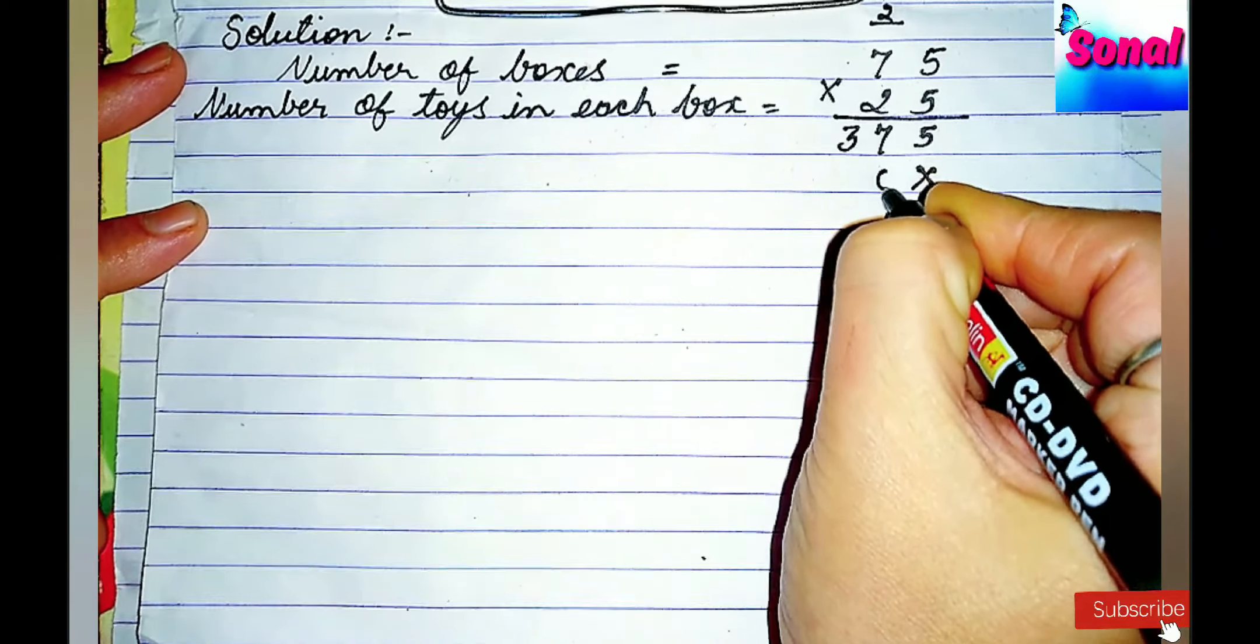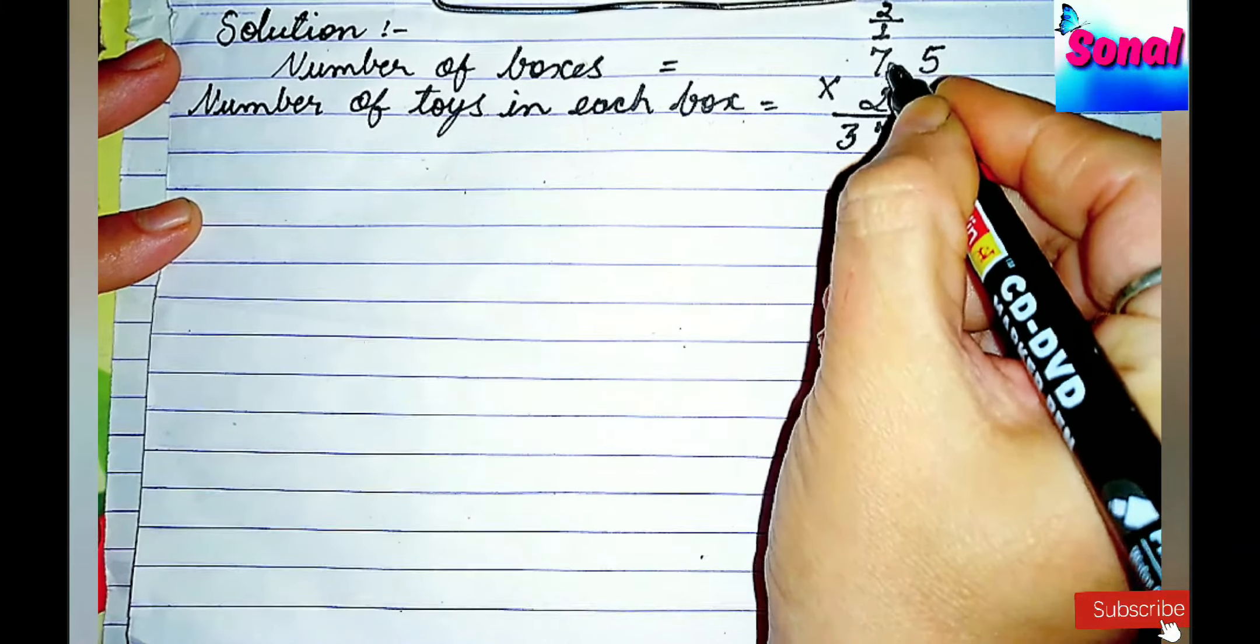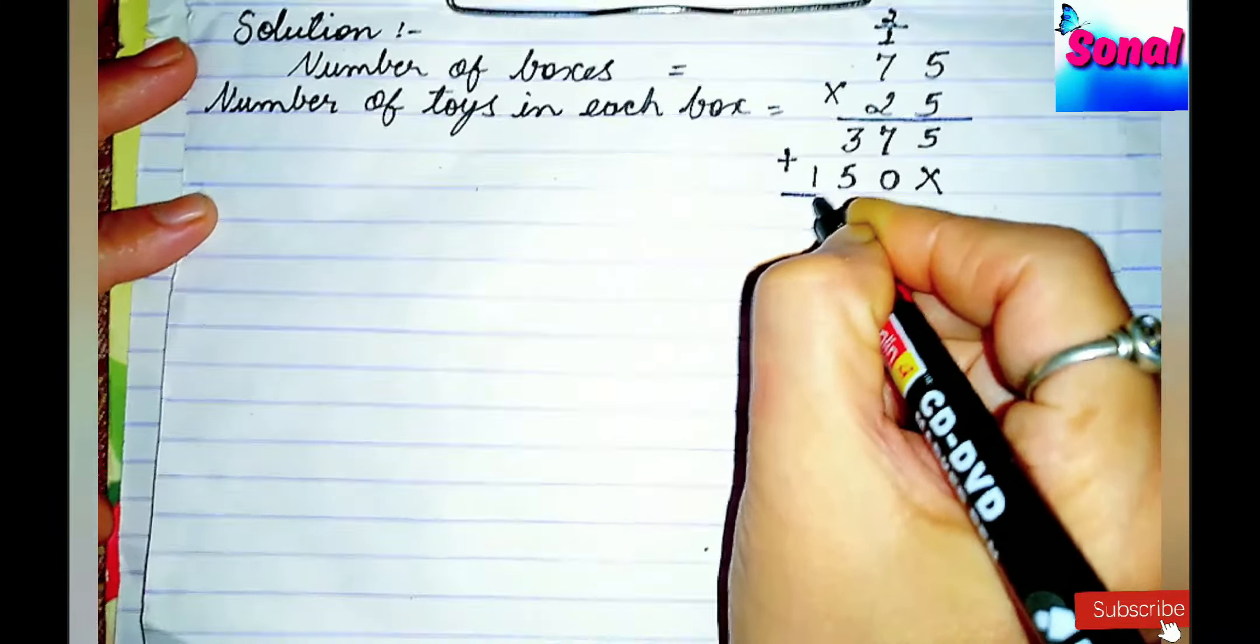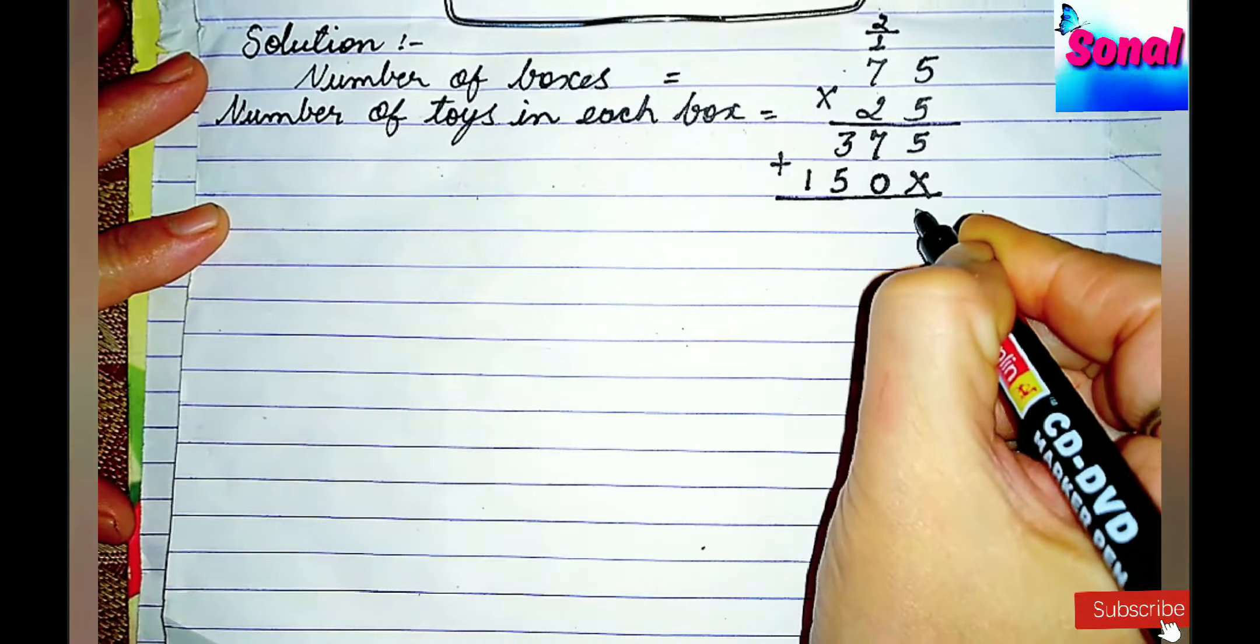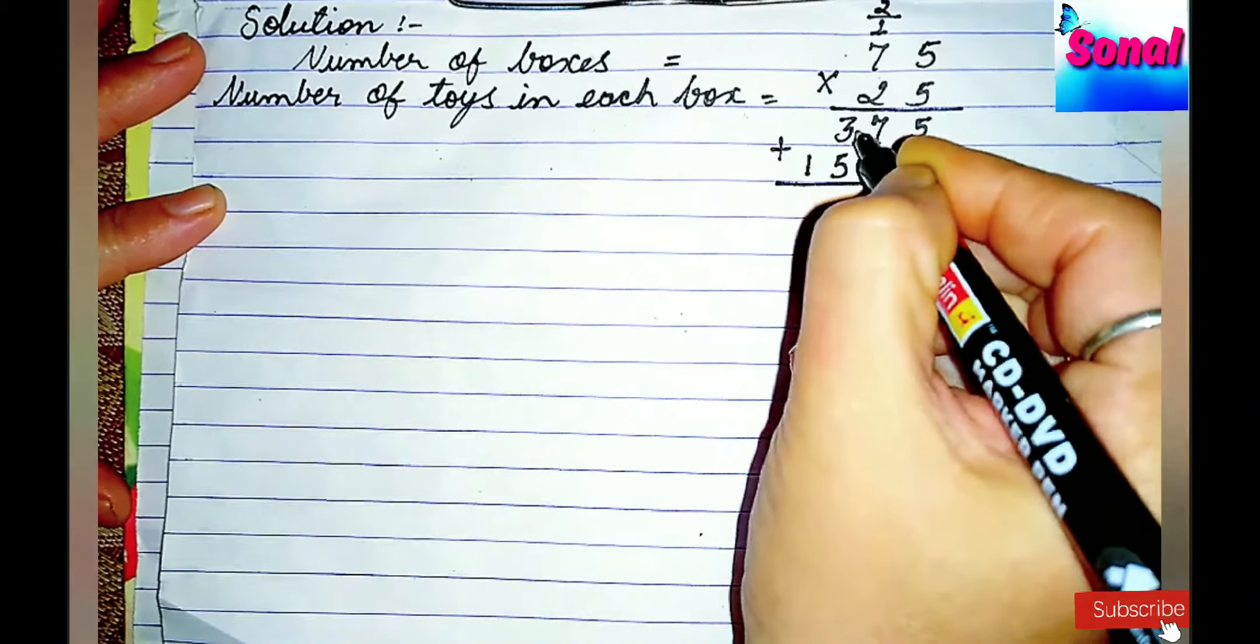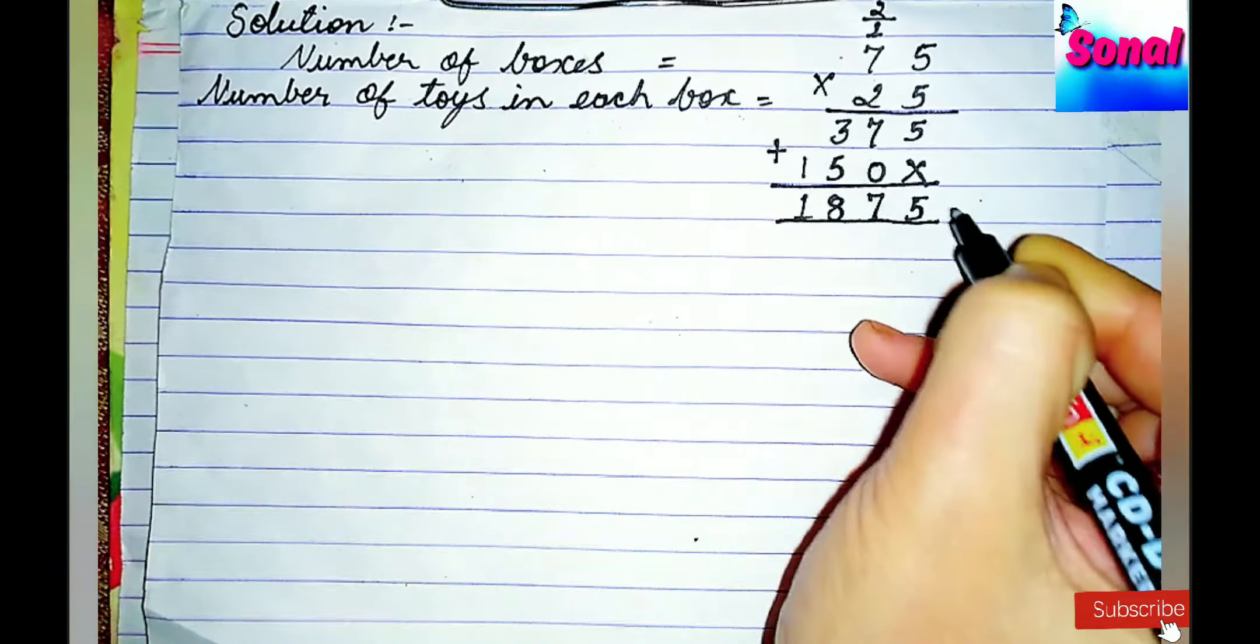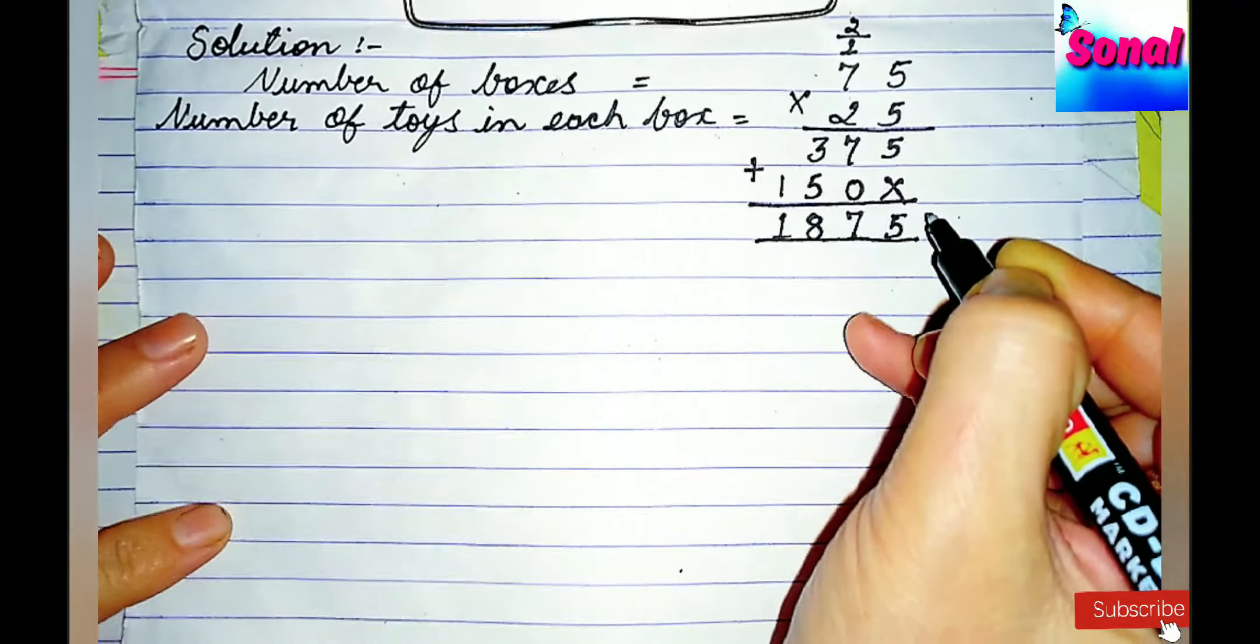5 times 2 is 10, write 0, carry over 1. 7 times 2 is 14 plus 1 is 15. Now, we will add both of them. 5 and cross is 5. 7 plus 0 is 7. 3 plus 5 is 8, and 1 as it is. So, these are 1875 toys.